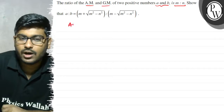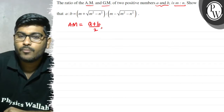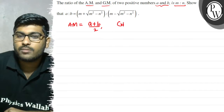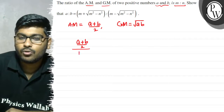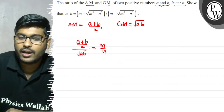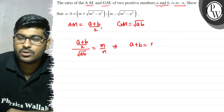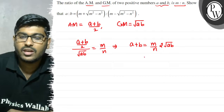The AM of the two numbers is (a + b)/2 and GM is root(ab). What is given? We have given (a + b)/2 upon root(ab) is equal to m upon n. So what can we write here? A plus b is equal to m upon n into 2 root(ab).